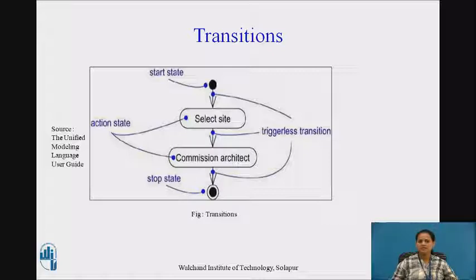the initial state with a solid ball and stop state with a solid ball inside a circle as shown in figure. We have a start state indicated with a darkened bubble which changes to select site next to commission architect and finally to a stop state as indicated with a darkened bubble inside a circle.